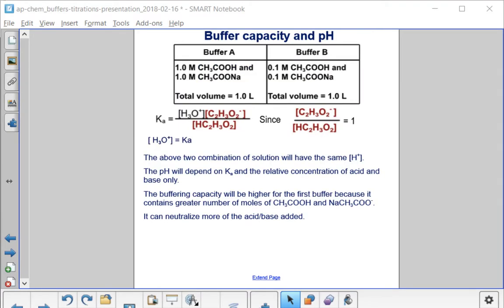Let's compare these two buffers and discuss how the buffer capacity and pH might be affected. Buffer A on the left is one molar concentrations of both acetic acid and sodium acetate in a total volume of one liter.